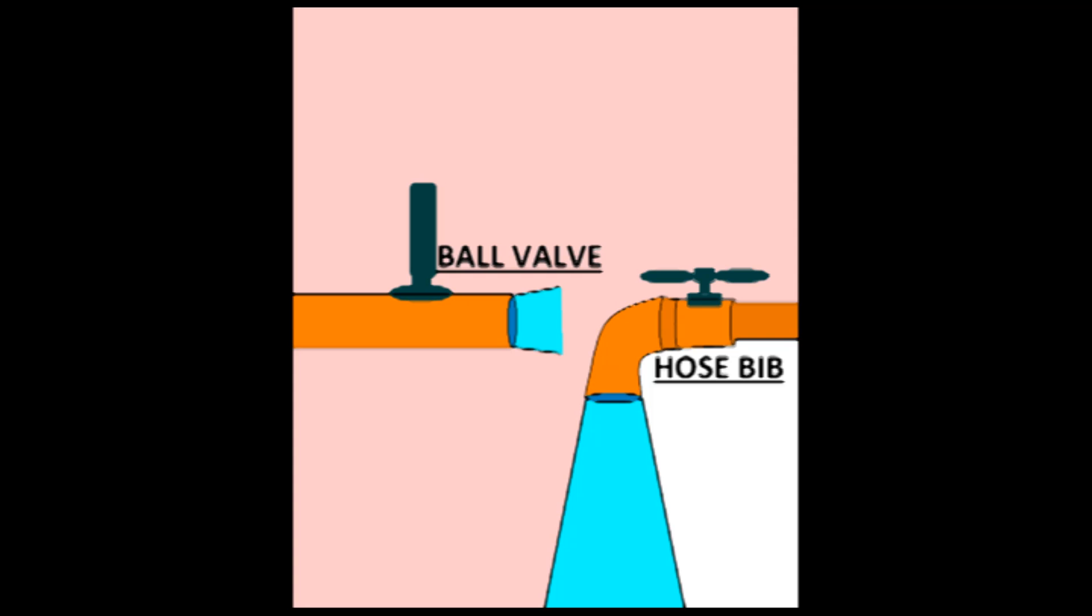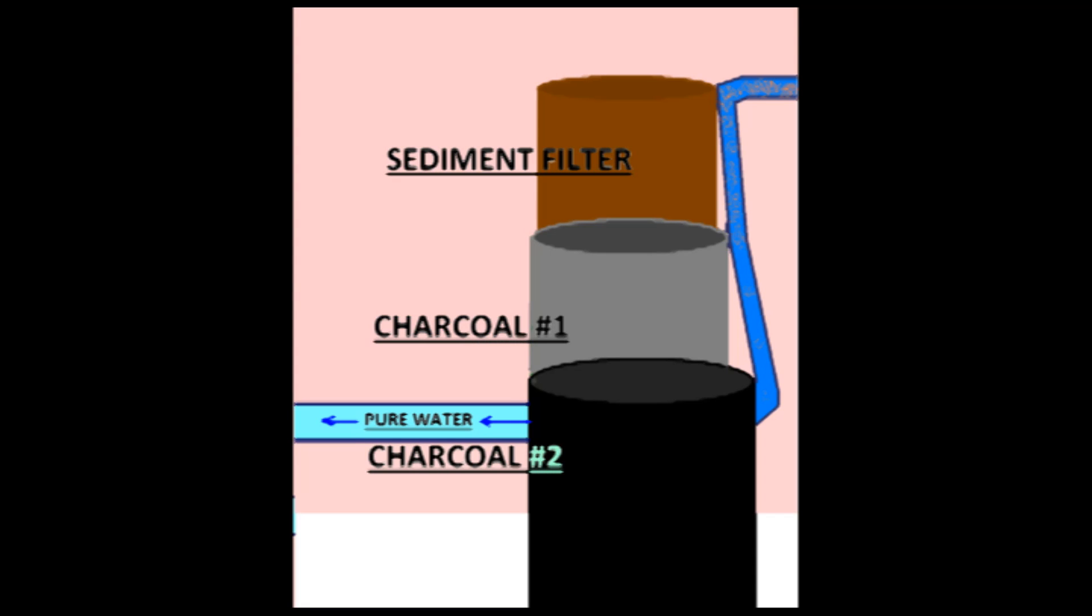Beginning at the water source, which can be a hose bib or even a dedicated valve close to your AC unit, you pipe your water into a triple filter system. The first filter is a sediment filter, and the next two filters are high-efficiency carbon filters.